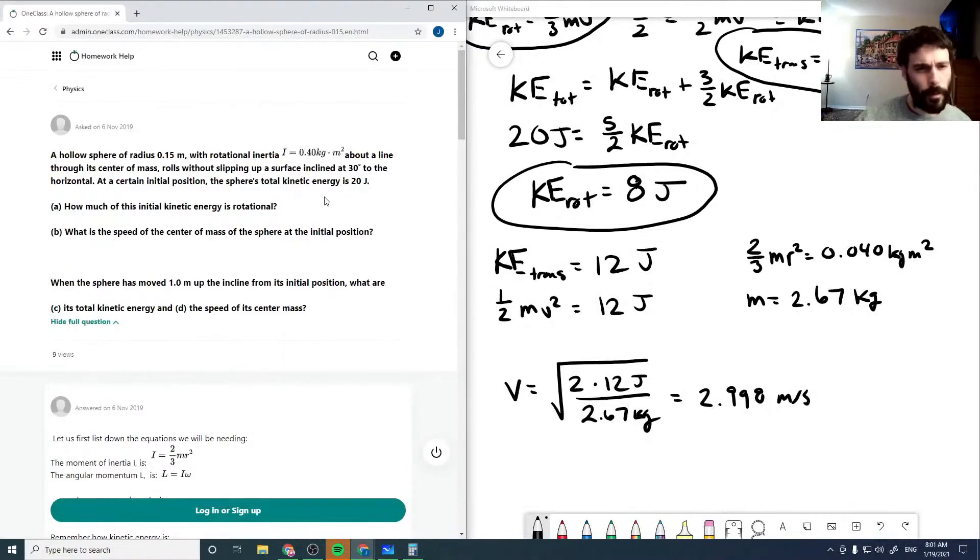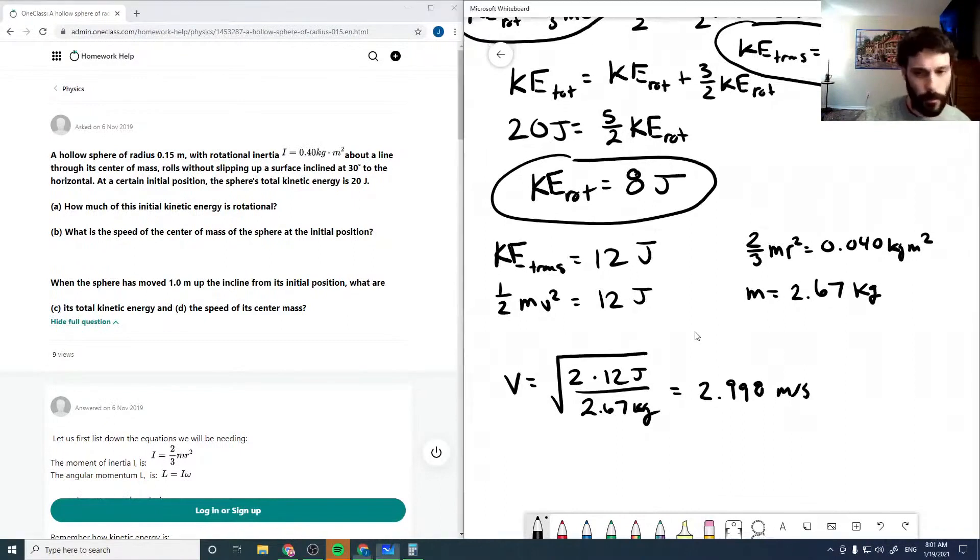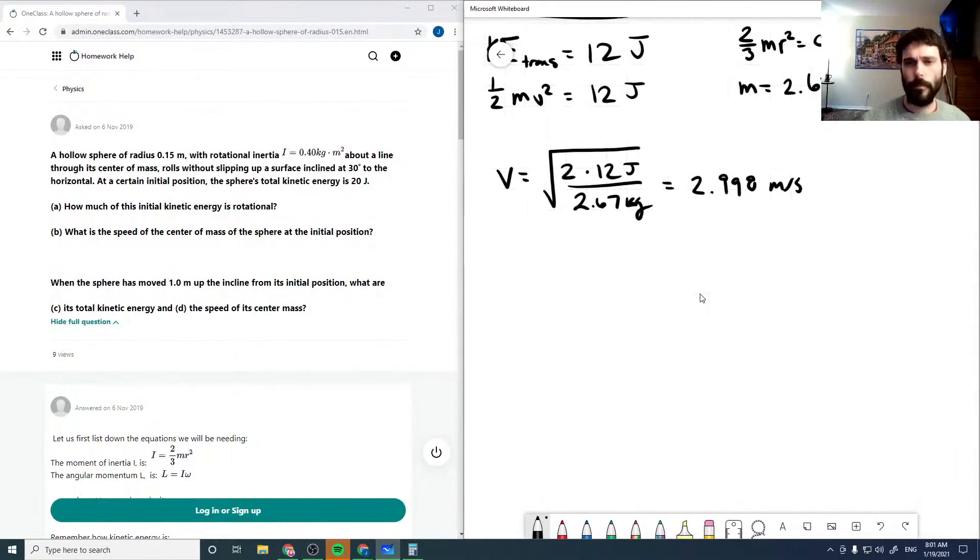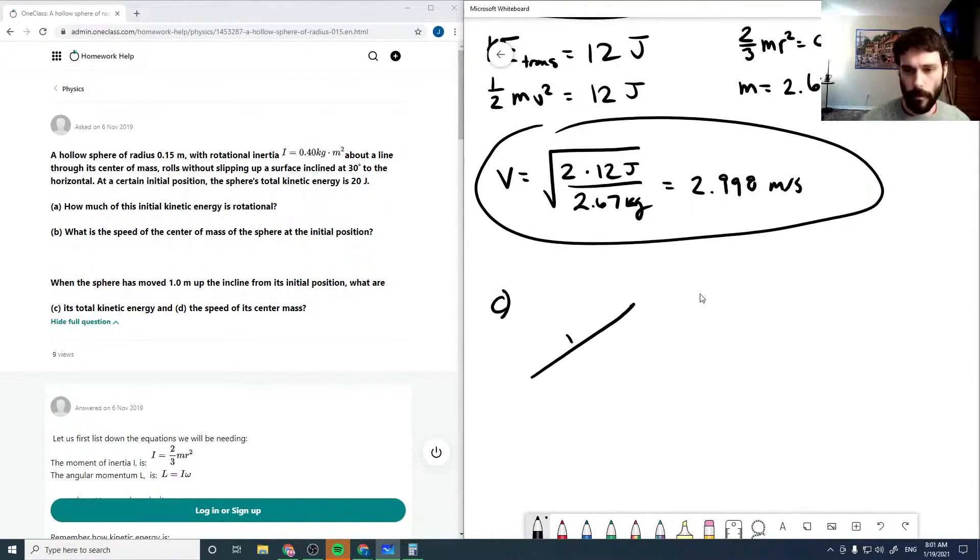Okay. So that's our initial speed. And now when we've moved one meter up the incline. So now for C, we've moved one meter up the incline. And it's at a 30 degree angle. And so then our height here is just sine 30 times our one meter. Or our height is 0.5 meters.